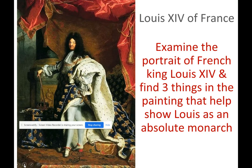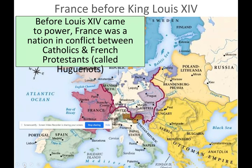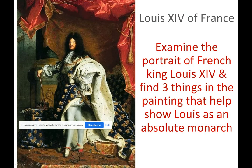Let's look at Louis XIV of France. Looking at his portrait, you can find things that show he's an absolute monarch: his sword, his hair, his clothing, the luxuries around him. He's surrounded by gold — everything's gold.